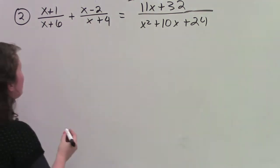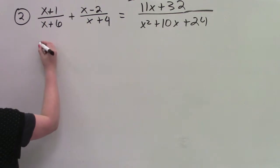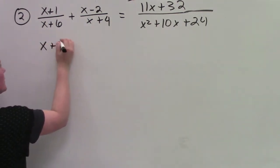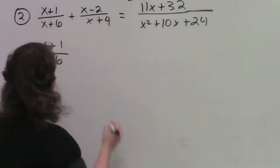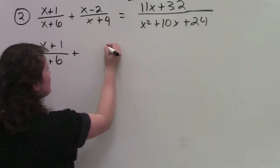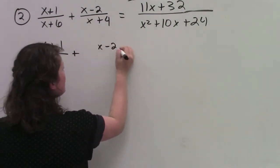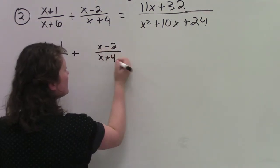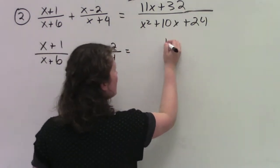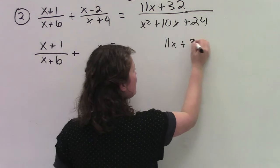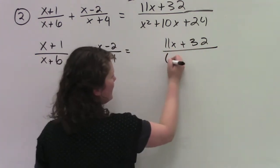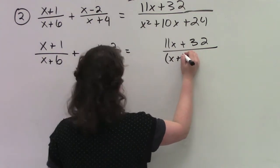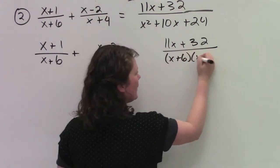Alright, first things first. Let's factor. x plus 1 over x plus 6. Yes, I do need to write all this down. Plus x minus 2 over x plus 4 equals 11x plus 32 all over x plus 2 all over. This is what I can factor: x plus 6, x plus 4.